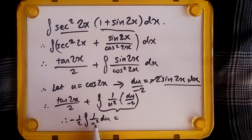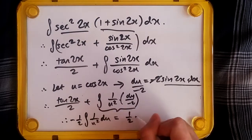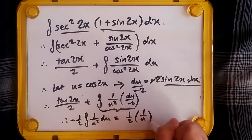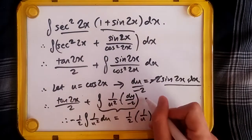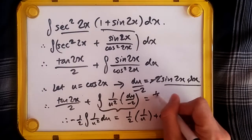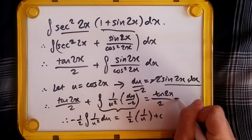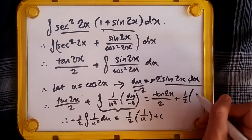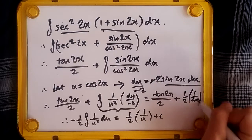And u is simply cos(2x), so finally our whole answer is: tan(2x)/2 plus 1/2 times 1 over cos(2x) plus c.